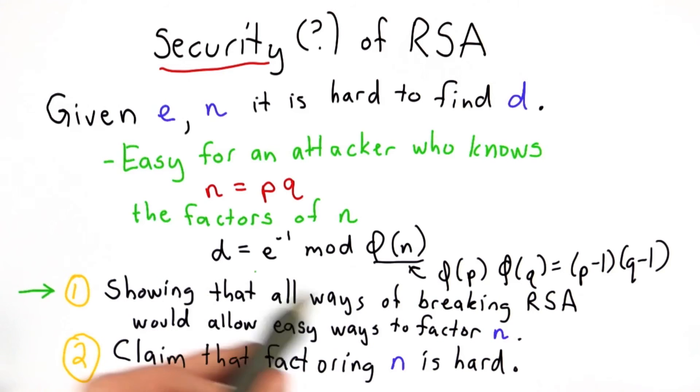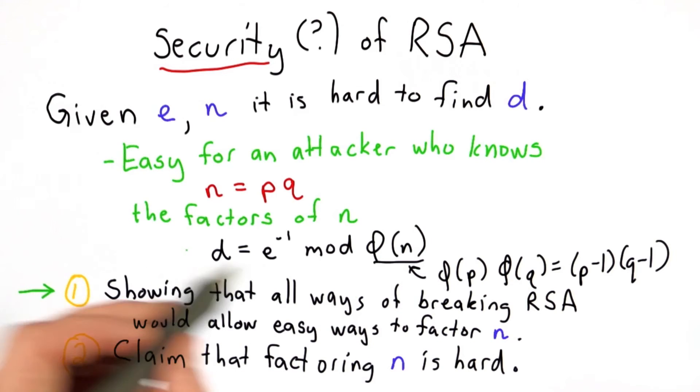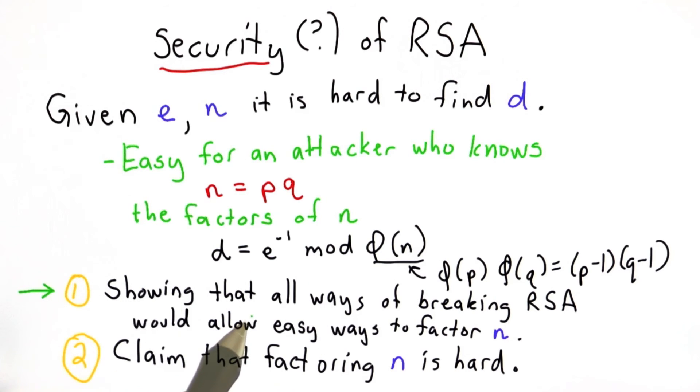We're going to show the first thing first, that other ways of breaking RSA, other ways of finding d, would allow us to factor n. And then we're going to argue from experience and historical effort that factoring seems to be hard.